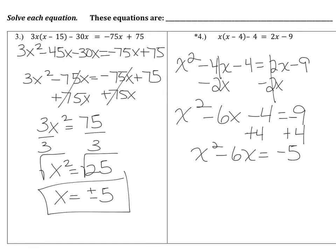The problem now is that isolating the variable isn't possible. The reason we can't isolate it is because x squared and x are not like terms — they can't be combined, so we can't get the variable alone. This is the type of quadratic equation that requires a different method.